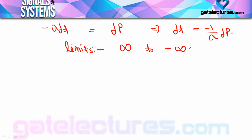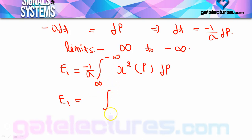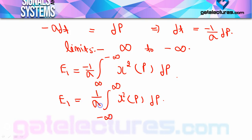Substituting into E1: E1 = ∫ from +∞ to -∞ x²(p) · (-1/a) dp. We know that swapping limits introduces a minus sign, so the two minus signs cancel, giving E1 = (1/|a|) ∫ from -∞ to +∞ x²(p) dp.